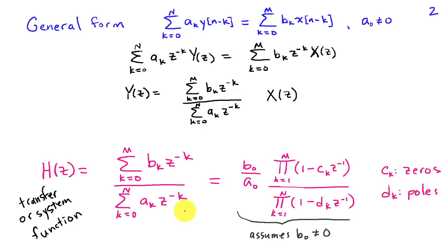And we can write this in terms of poles and zeros as well. If we assume B0 is not equal to 0, then we can write it as I've shown here, where I have B0 over A0, product of 1 minus the CK z inverse, where CK are the zeros. And then in the denominator, we have the product 1 minus DK z inverse, where DK are the poles.